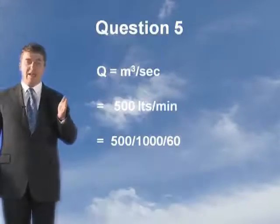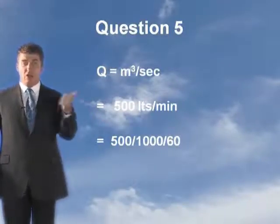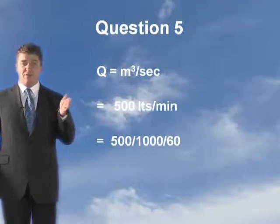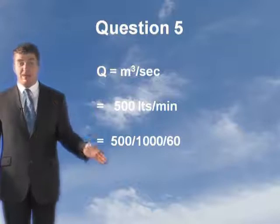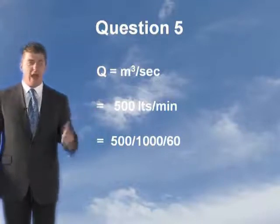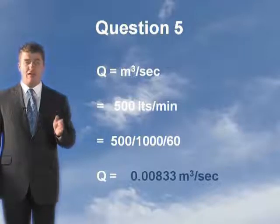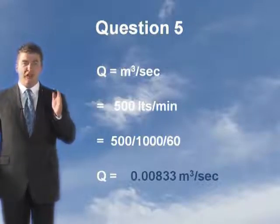Now we've worked out the pressure at the outlet, we need to convert the units correctly into SI units. At the moment the flow is in litres a minute; we need to convert it into metres cubed per second. You divide by 1000 to give metres cubed, then divide by another 60 to give per second. So 500 divided by 1000 then divided by 60 gives Q equals 0.00833 metres cubed per second.